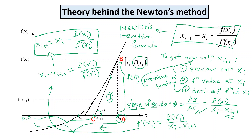To summarize the derivation: the slope of line BC is tan(theta) = AB / AC, where AB = f(x_i) and AC = x_i - x_{i+1}. Because the slope of the function equals the derivative, we replace tan(theta) with f'(x_i) and rearrange to get x_{i+1} = x_i - f(x_i) / f'(x_i). That is Newton's iterative formula.